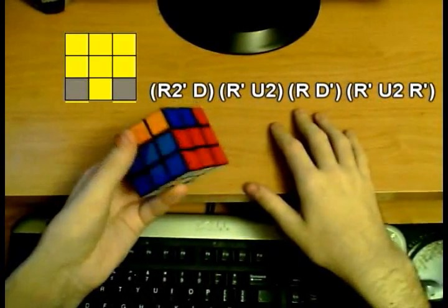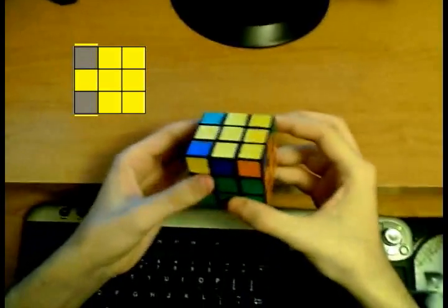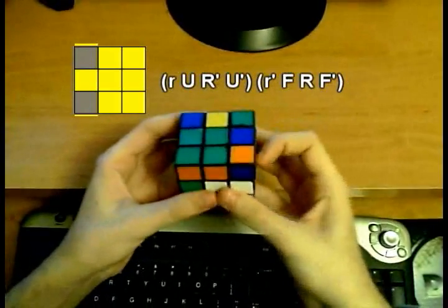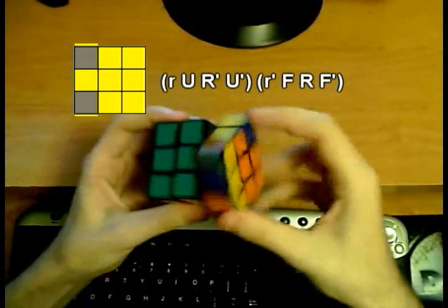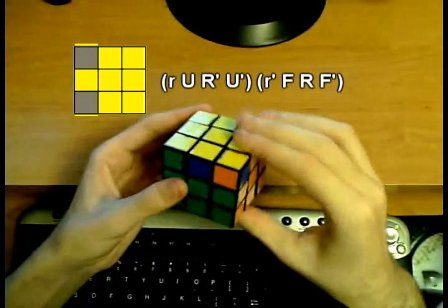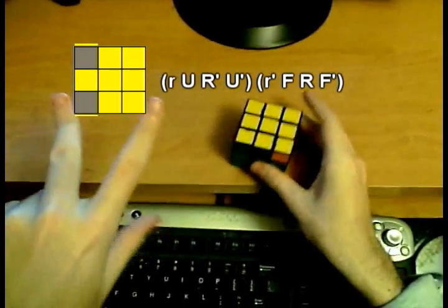Okay, I will now show you how to solve the chameleon. Hold it like this and do the following algorithm: small r U R' U' small r' F R F'. That's all of it.